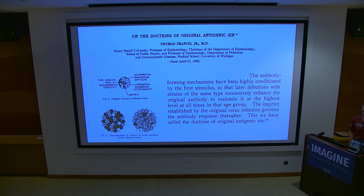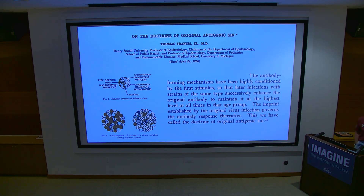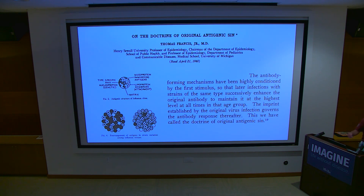Thomas Francis was probably the brains behind the polio vaccine — Salk was a postdoc in Francis's lab. Francis was a brilliant viral immunologist, and he coined the term original antigenic sin. These figures come from a brilliant review he wrote in 1960.